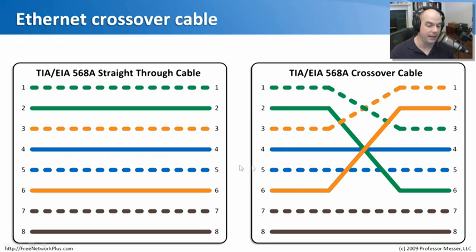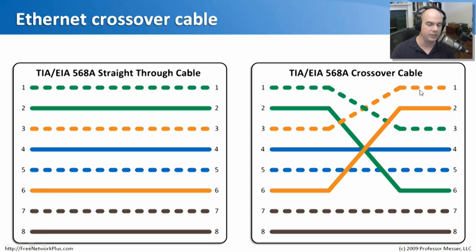Everything else stays exactly the same — pins four, five, seven, and eight remain straight through. The only changes are one to three and two to six on both sides. Once you make those changes, you can plug two ethernet connections directly into each other and they'll show link on both sides. You can communicate without requiring any hub or switch, which can really come in handy in a pinch.